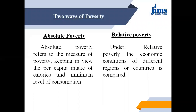There are two types of poverty: absolute poverty and relative poverty. Absolute poverty refers to the measure of poverty keeping in view the per capita intake of calories and the minimum level of consumption. Relative poverty means the economic condition of different regions or countries when compared with each other.